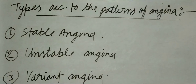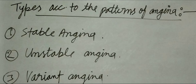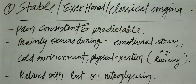Types of Angina Pectoris: According to the pattern of Angina, we can classify Angina into three main types: Stable Angina, Unstable Angina, and Variant Angina. Stable Angina is also known as Exertional Angina or Classical Angina.